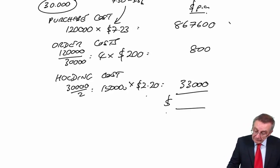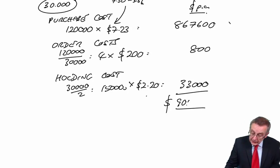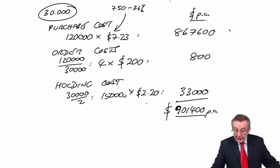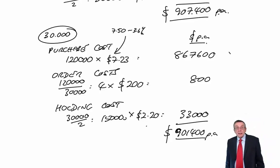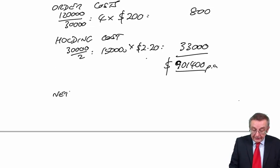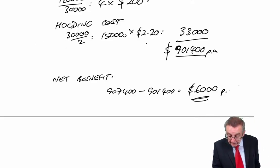So over a year, what will be the total cost on this basis? I think I'm right, $901,400. And what did the question want? Calculate if we'll benefit financially. Well yes, we will. Instead of paying $907,000, we'll pay $901,000. And in fact you could just state that and there's your answer. I will actually write down that the net benefit, difference between them, is $6,000 per annum. And there we are.